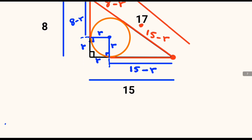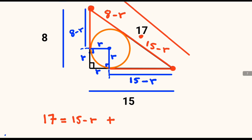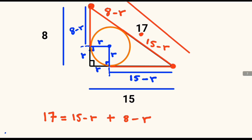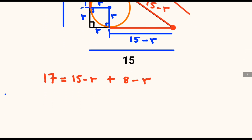So we'll have 17, which will be equal to (15 minus r) plus (8 minus r). From here we can solve for r.